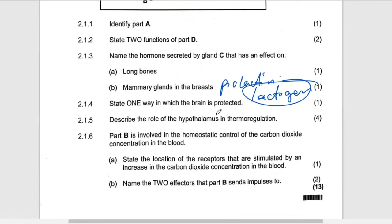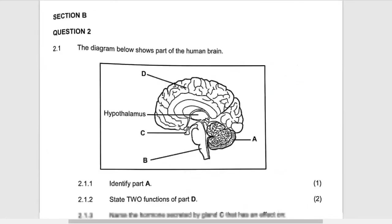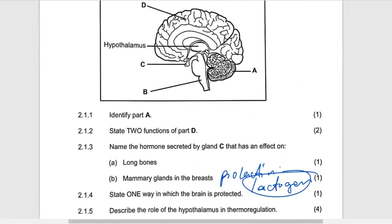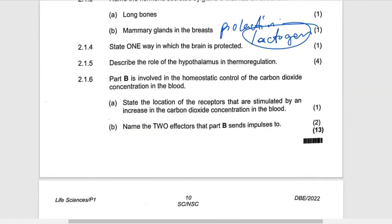That's what you need to know, because they didn't ask whether it is cold or hot conditions. Part B is involved in homeostatic control of carbon dioxide concentration. Part B is the medulla oblongata. The receptors are found in the blood vessels which we call the carotid arteries, located at the upper part of the body — the neck and chest area, moving from the neck up toward the head.